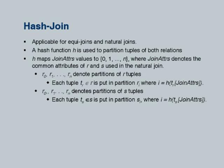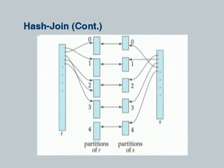Merge join is very efficient if the relations are sorted, but if you have to sort them in the first place it can be a bit slow. An alternative is hash join. Here is one relation R and here is the other relation S — these are very big, they do not fit in memory. The idea is: I take the join attributes of R and the join attributes of S and compute a hash value which maps the join attribute to a range 1 through N for both of them using the same function.